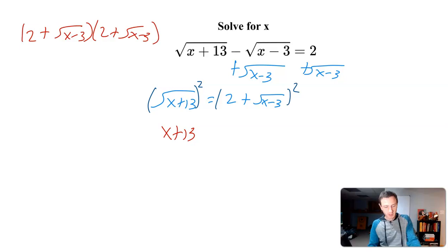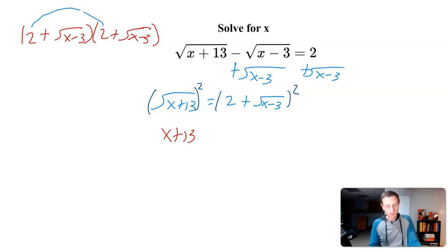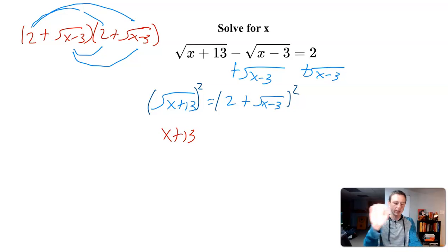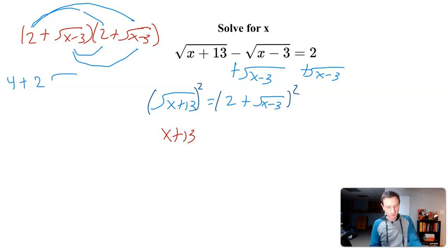Some people would immediately know what that is, but I'll explain it fully. I'm using the distributive property — essentially FOIL. So: 2 times 2, then 2 times the square root of x minus 3, then square root of x minus 3 times 2, then square root of x minus 3 times square root of x minus 3. That gives us 4, plus 2 times square root of x minus 3, plus another 2 times square root of x minus 3.